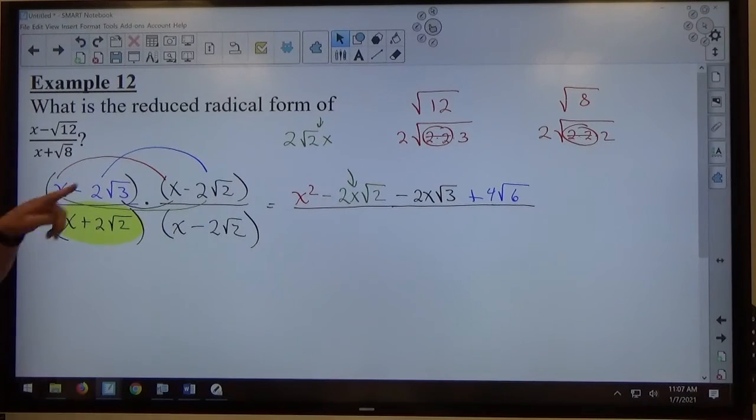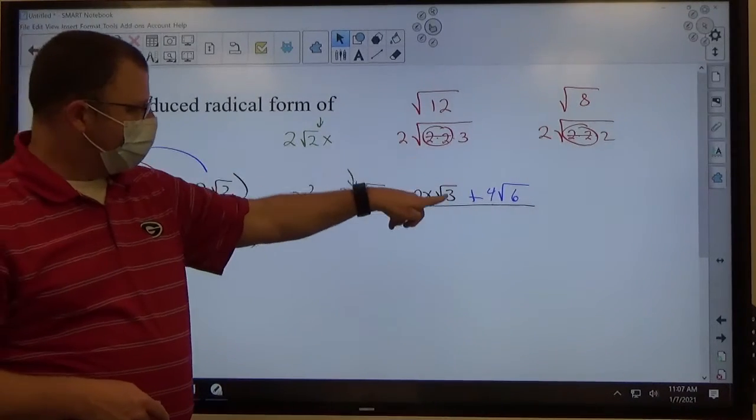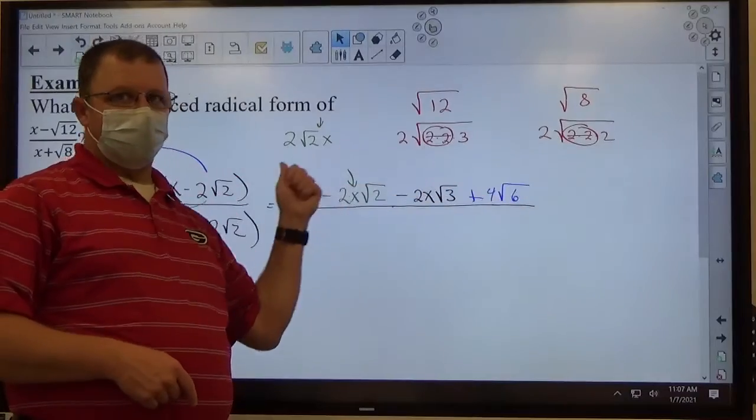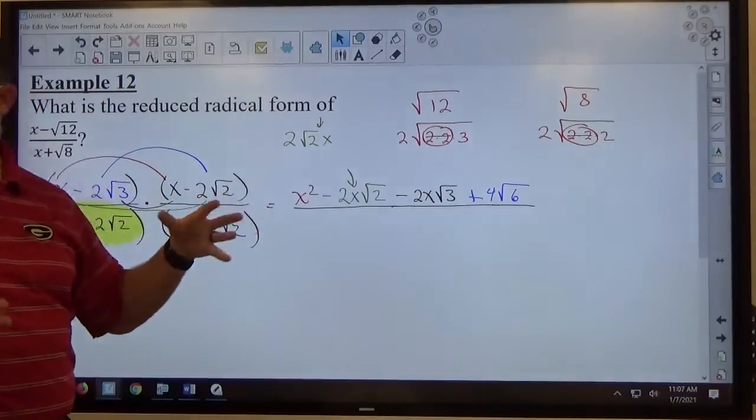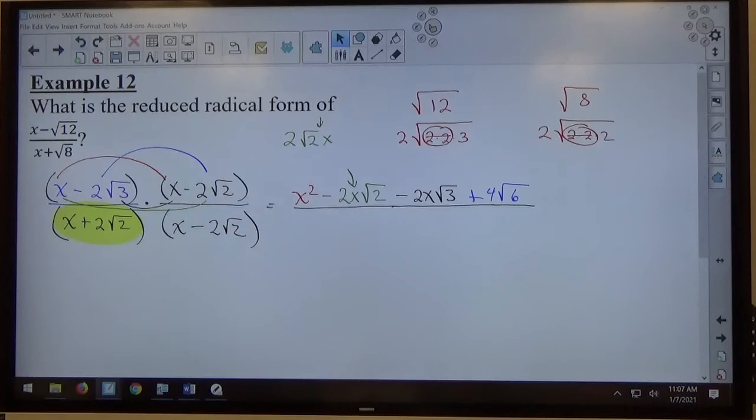Notice the four terms on top. Square root of 2 doesn't match square root of 3, doesn't match square root of 6, doesn't match no square root at all. So there are no like terms on top. So there's no way to add or subtract all those objects into anything prettier than that. That's what the top's going to end up being.